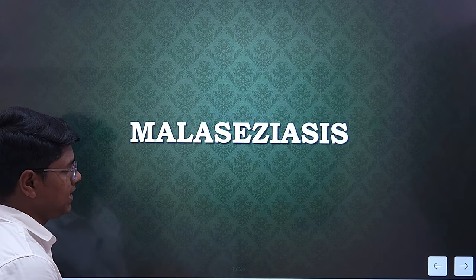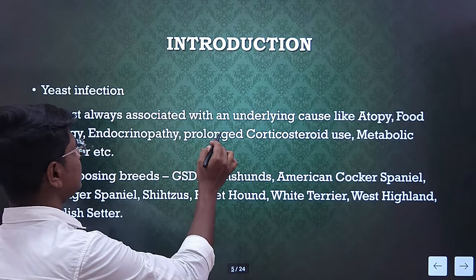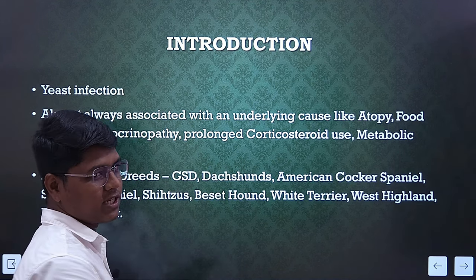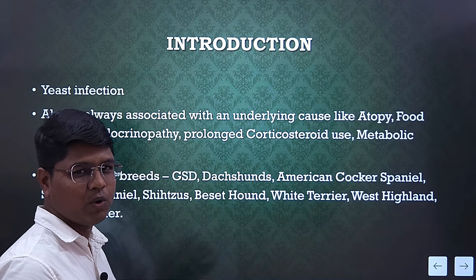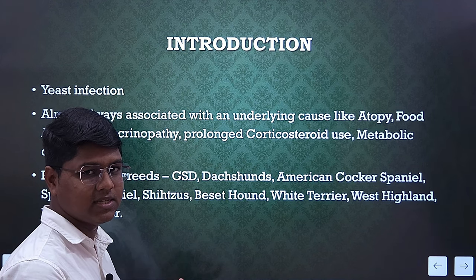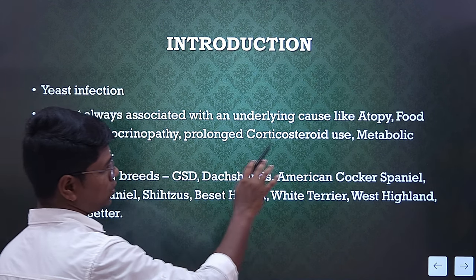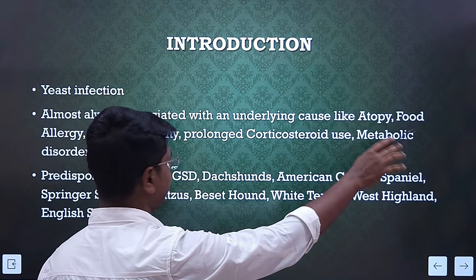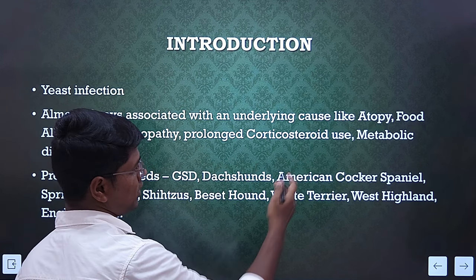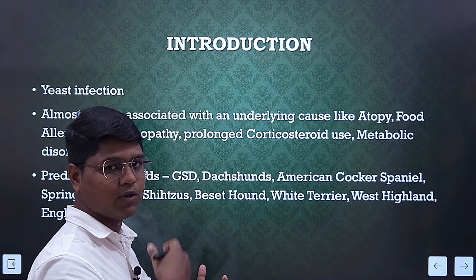The first disease we will study is Malasseziasis — this is a yeast infection. It is almost always associated with an underlying cause. Fungal diseases are almost always secondary diseases; there are some diseases underlying. Like atopy, food allergy, endocrinopathy, prolonged corticosteroid use — these all depress the immune system. When the immune system is depressed, then fungus will grow. Usually they are found on the skin and are not harmful, but when the animal's immune system is compromised, they will proliferate.